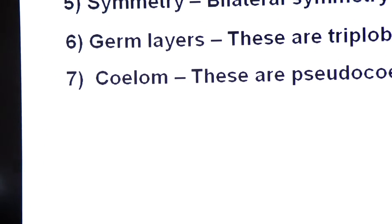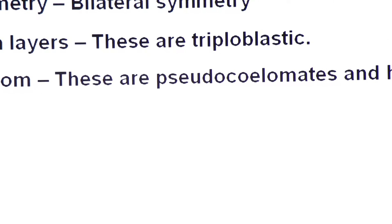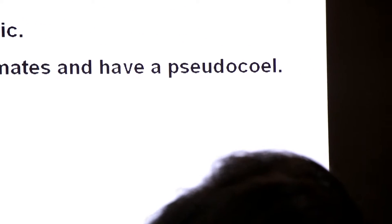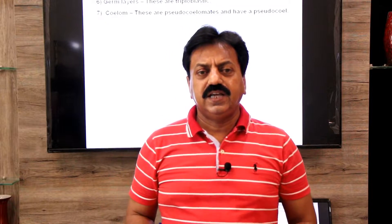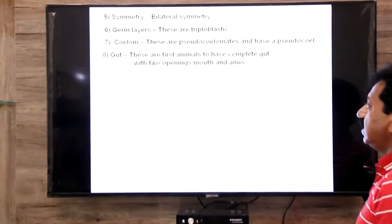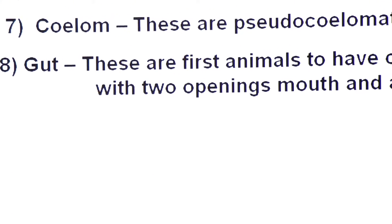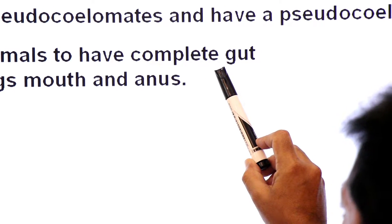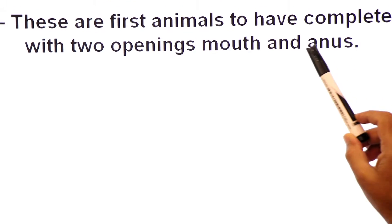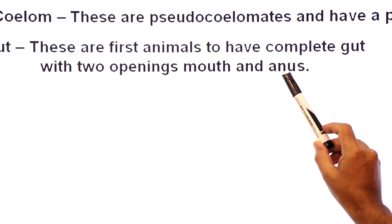Coelom, or body cavity: they are pseudocoelomates and have a false body cavity known as pseudocoel. A pseudocoel is a coelom present between the endoderm and mesoderm. These are the first animals to have a complete gut with two openings — mouth and anus.